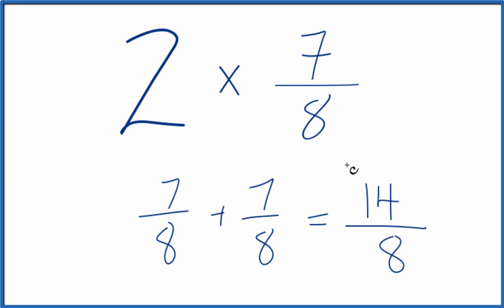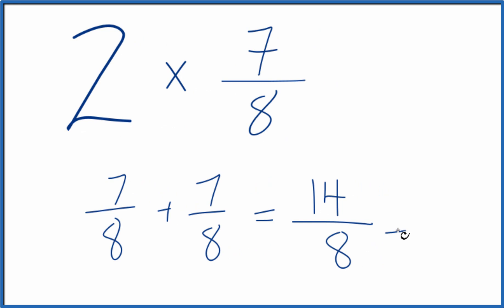But these are both even numbers, so we can simplify these. Let's divide both by 2. 14 divided by 2 is 7. 8 divided by 2 is 4. And we can't simplify that any further.